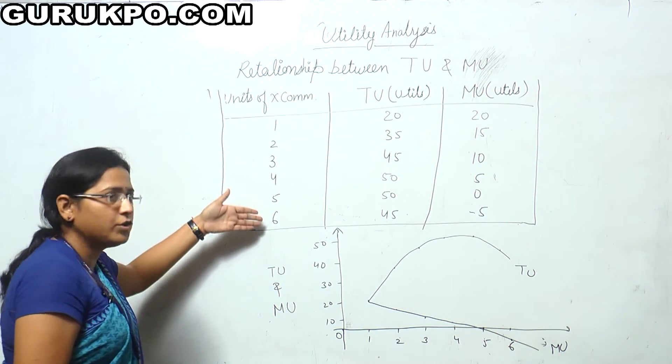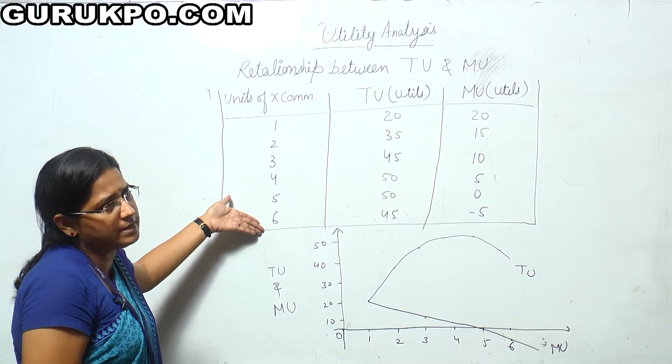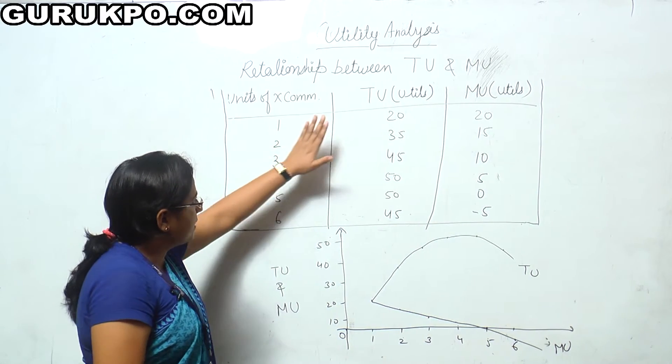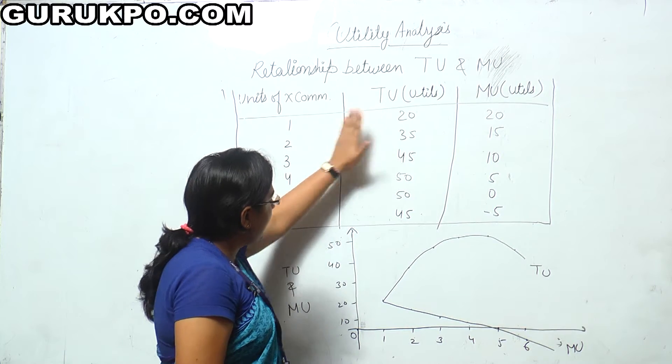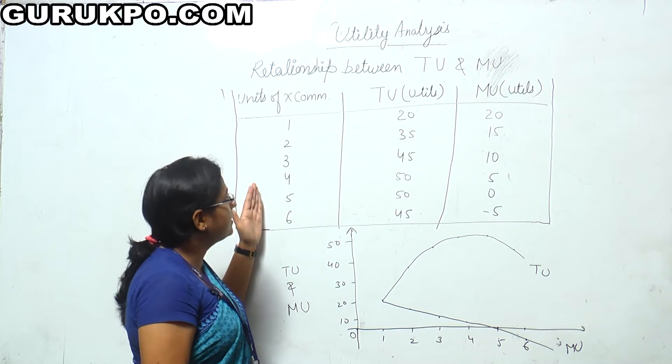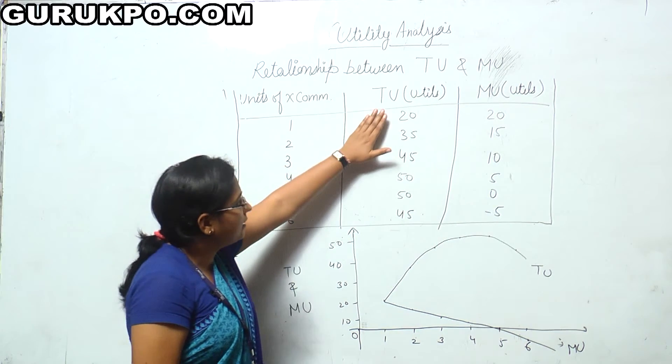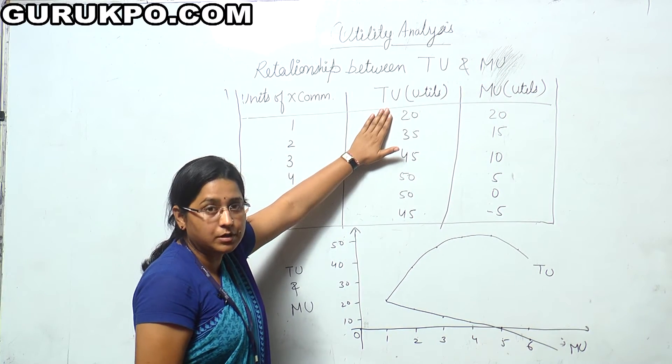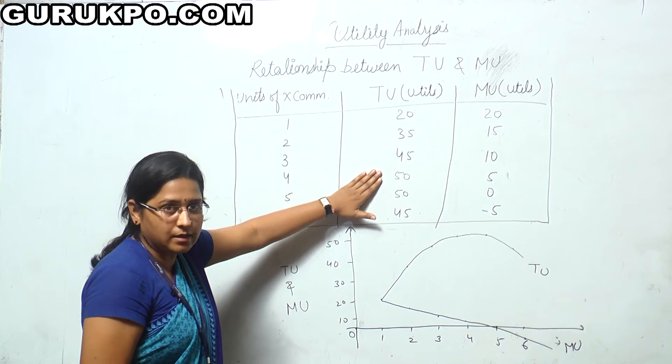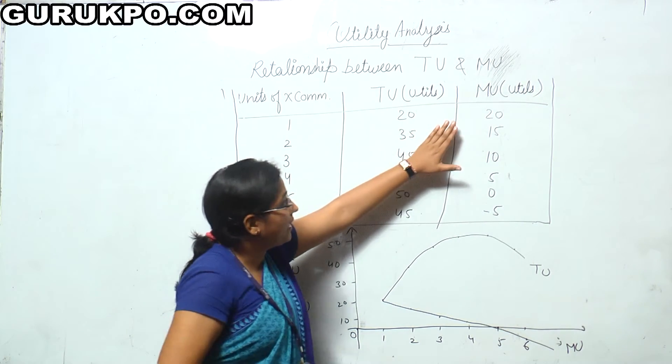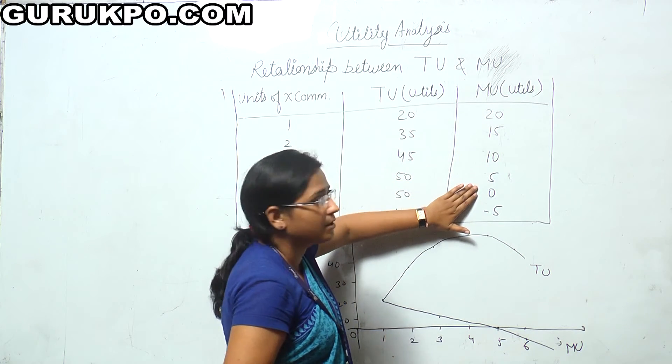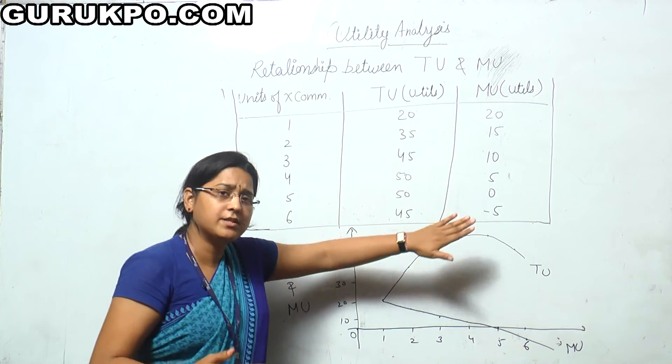These are six units that we have consumed, we can say that we have consumed apple. As we consume more and more quantity or units of this apple, the utility that derives from this particular commodity goes on increasing. But for the additional unit, utility is diminishing. Why so? Because it is in our nature.